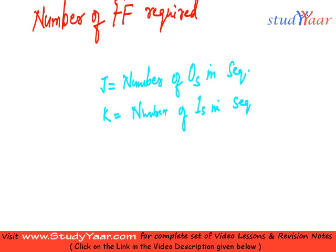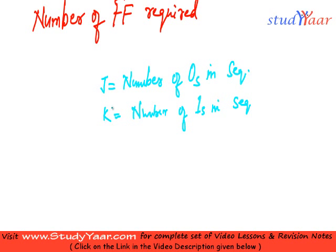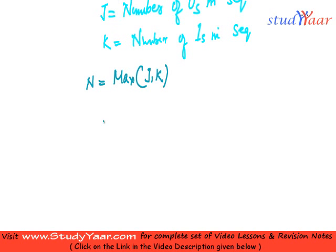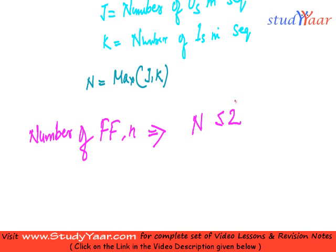Then you take the highest of this value. Let's suppose the highest of this value is N. So N is maximum of j, k. Now, you decide number of flip-flops using this equation. Your number of flip-flops, I would say this is small n, is given by this equation: N less than equal to 2 raised to n minus 1. This is your N, you put it over here and you find your n.